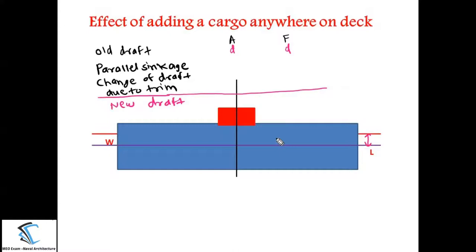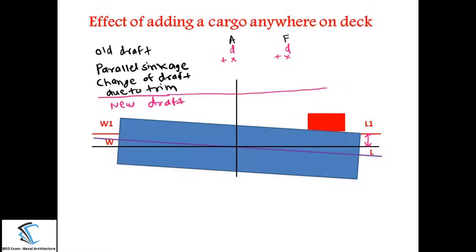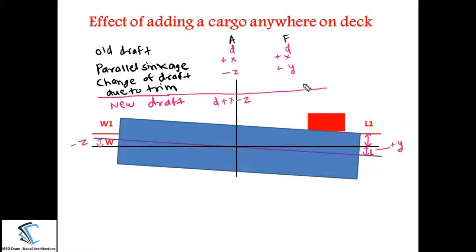Since this is a parallel sinkage, you add this value to the earlier draft — plus x at both sides. Now I am shifting this cargo forward of the ship. When shifting the cargo forward, there will be an increment — let's call that y, and I am taking it as a plus. At the aft side, let's call this z, and that is a minus. So at the aft we have minus z and at the forward it is plus y. The new draft is the algebraic summation: at the aft it is D plus x minus z, and at the forward it is D plus x plus y.